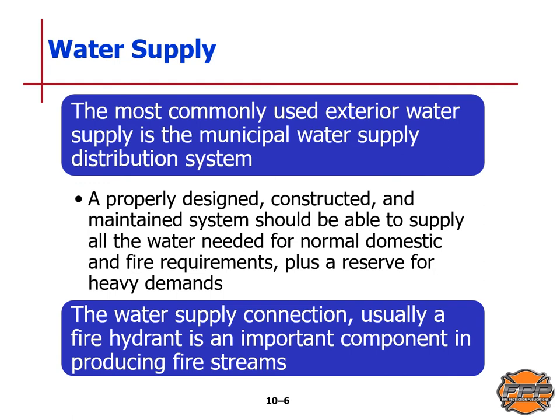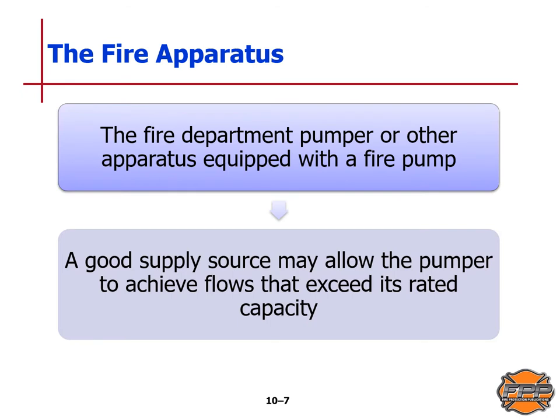The most commonly used exterior water supply is the municipal water supply distribution system. A properly designed, constructed, and maintained system should be able to supply all the water needed for normal domestic and fire requirements, plus reserve for heavy demands. The water supply connection, usually a fire hydrant, is an important component in producing fire streams. A fire department pumper is equipped with a fire pump, so a good supply source may allow the pumper to achieve flows that exceed its rated capacity.